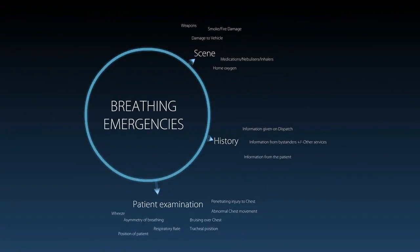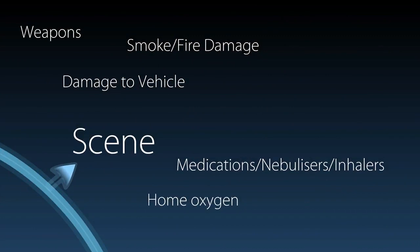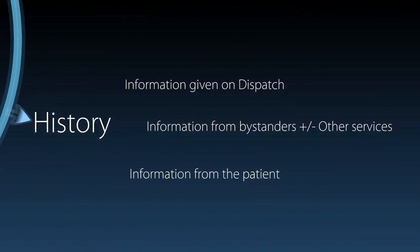Next, we'll talk about breathing emergencies, which are approached in a similar way to airway emergencies — with scene assessment, followed by history, and followed by examination. Looking at the scene in both trauma and non-trauma patients can give clues as to the cause of difficulty. Finding nebulisers and inhalers, for example, may suggest the patient has asthma or COPD. History comes from dispatch information, bystanders and other services on scene, and the patient themselves.